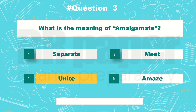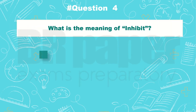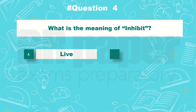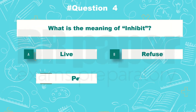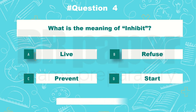Question 3: What is the meaning of amalgamate? Correct answer: C, unite. Question 4: What is the meaning of inhibit? Correct answer: C, prevent.